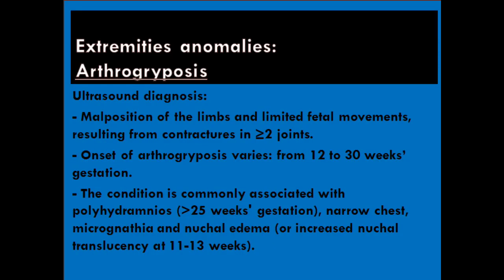The next abnormality is arthrogryposis. Ultrasound diagnosis: malposition of the limbs and limited fetal movements, resulting from contractures in greater than or equal to two joints. Onset of arthrogryposis varies from 12 to 30 weeks gestation. The condition is commonly associated with polyhydramnios greater than 25 weeks gestation, narrow chest, micrognathia, nucledema, or increased nuchal translucency at 11 to 13 weeks.